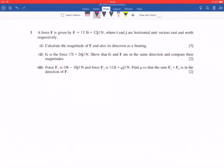Question three. A force is given by 3.5i plus 12 J newtons, where I and J are horizontal and unit vectors east and north, respectively. So basically, I and J, as we'd expect.